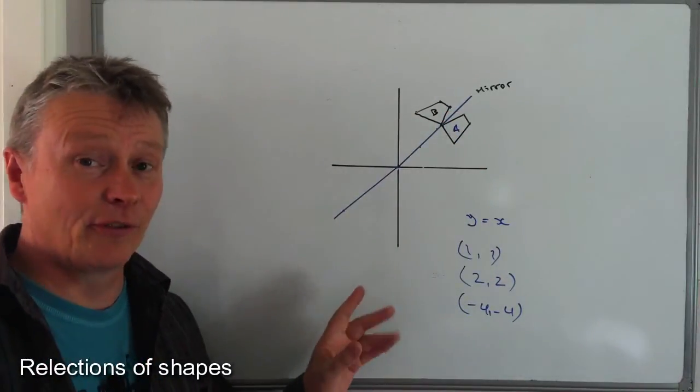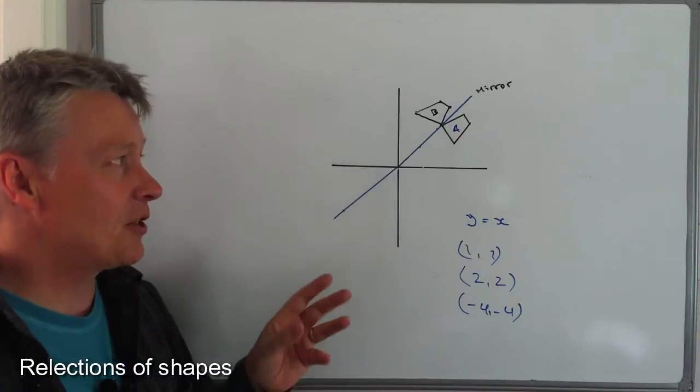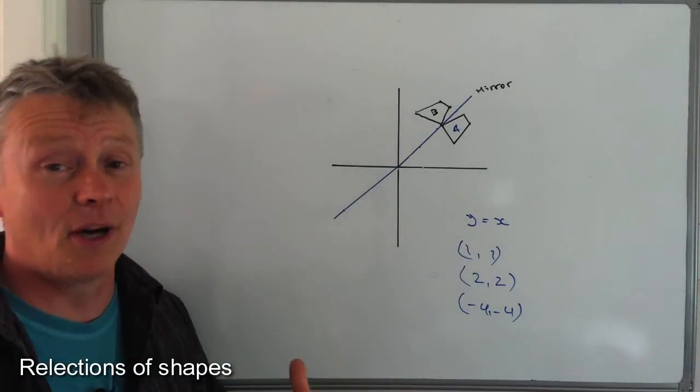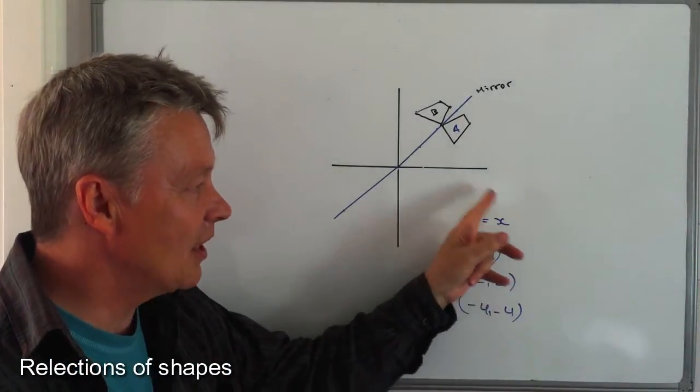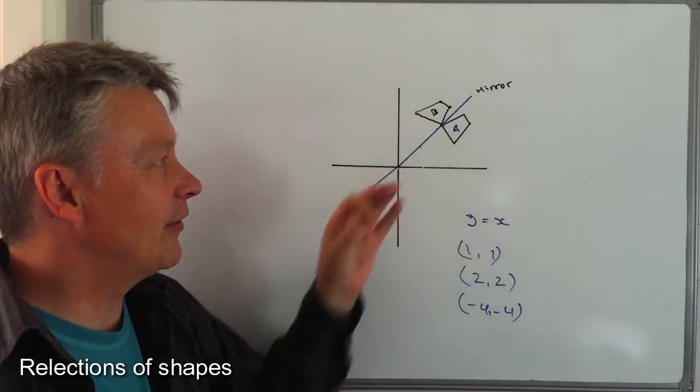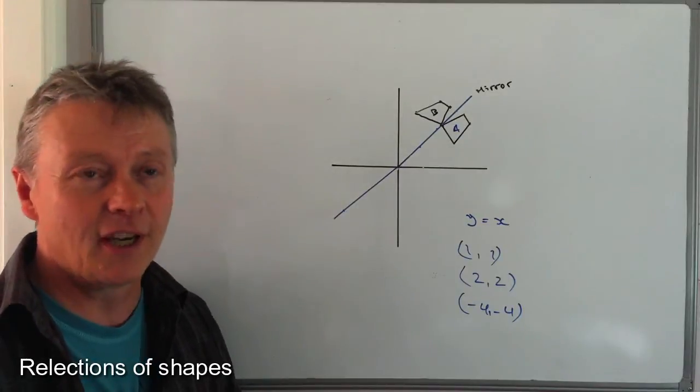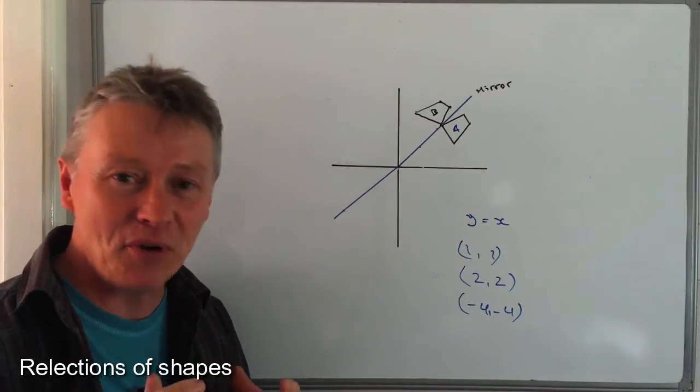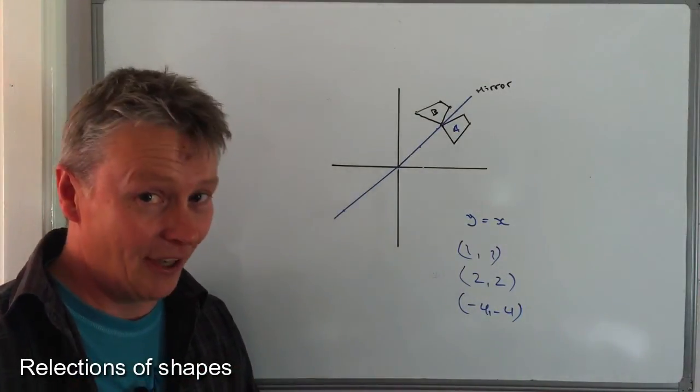I hope that's been okay for you. It is a question where lots of students lose marks, mainly because they don't get this mirror line drawn accurately, or because they forget about the points on the shape needing to be perpendicular to the mirror line.